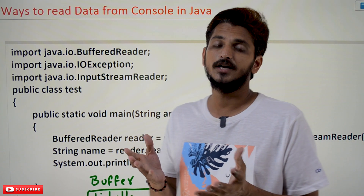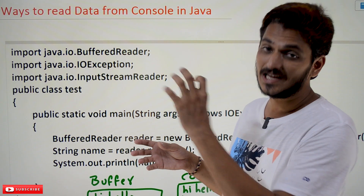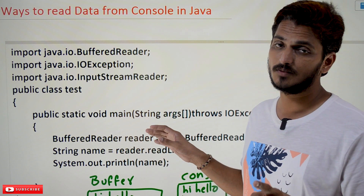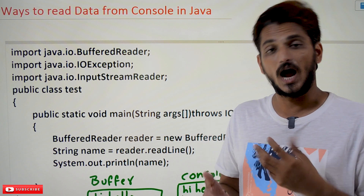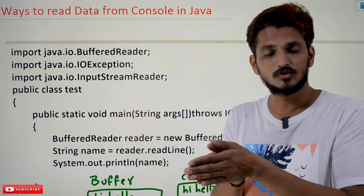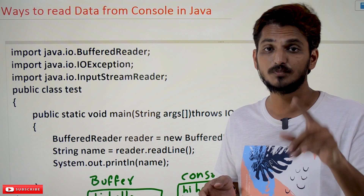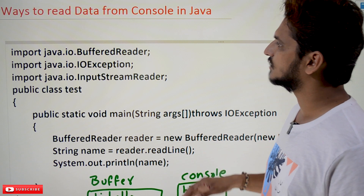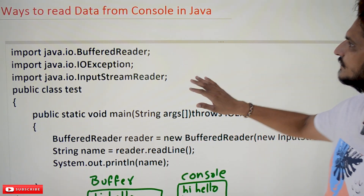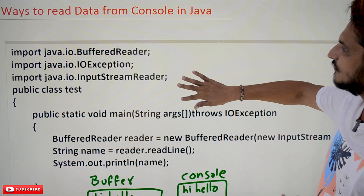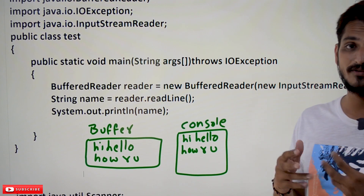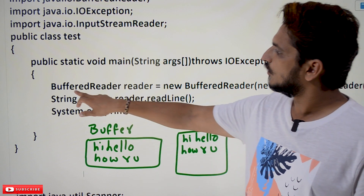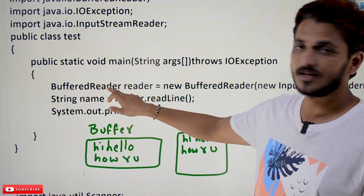In our previous classes we never did anything like this to read data from the keyboard. This is the first class on this topic. In our last classes we clearly discussed about input/output streams and System.out. Please watch those classes and come back here. The link for the playlist is provided in the description below. Coming to today's class, if you want to read the data from the console, we have two ways. The first way uses the BufferedReader class.